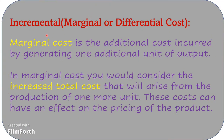We need to be very clear about incremental, marginal, or differential cost. Marginal cost is the additional cost incurred by generating one additional unit of output. In calculating marginal cost, you consider the increased total cost arising from producing one more unit — emphasis is on increased total cost. These costs can have an effect on the pricing of the product. It's very important in decision making to know the concepts of relevant cost, irrelevant cost, and incremental cost clearly.